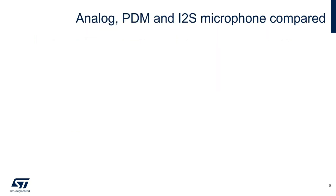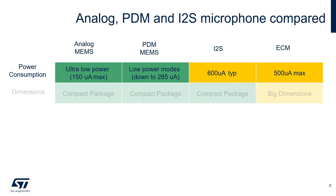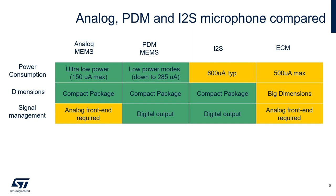In this table, we will summarize a set of pros and cons for four microphone categories: analog MEMS, PDM MEMS, I2S, and ECM microphones. In terms of power consumption, MEMS — both analog and PDM — are the best performers. In terms of dimensions, ECM microphones are much bigger than MEMS and are not easily integrated in hearable or mobile devices. About signal management, digital microphones are much more easy to handle and they don't need an analog front-end or specific care in signal management.